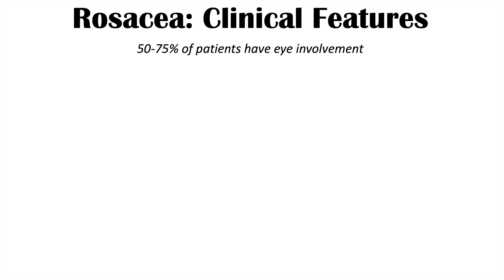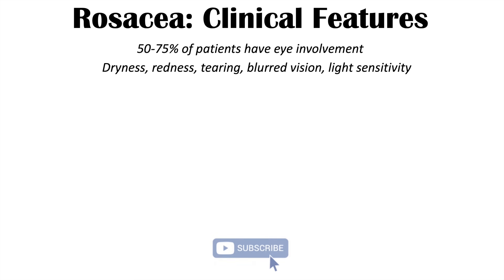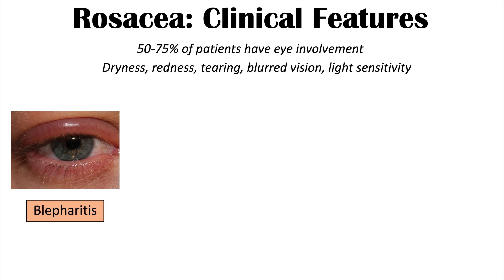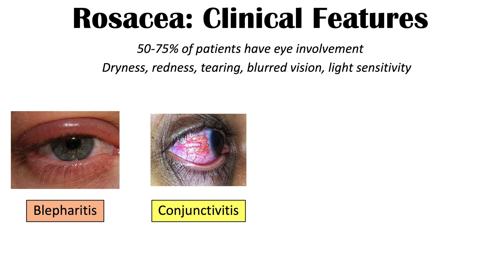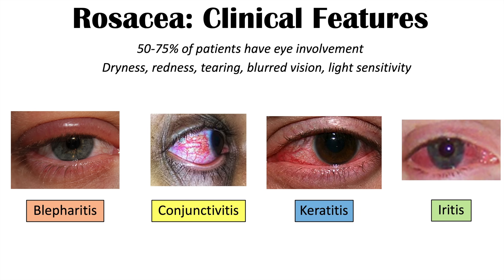The ocular form of rosacea affects 50 to 75% of patients. Patients commonly have dryness, redness, or tearing of the eyes, and may experience blurred vision or light sensitivity. More specific findings include blepharitis (inflammation of the eyelids), conjunctivitis (inflammation of the conjunctiva), keratitis (inflammation of the cornea), and iritis (inflammation of the iris).